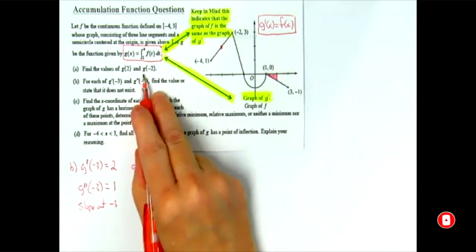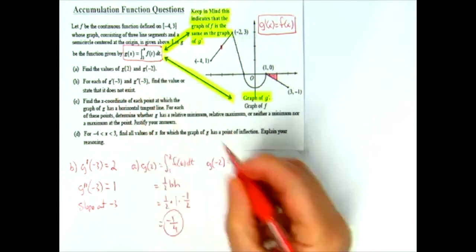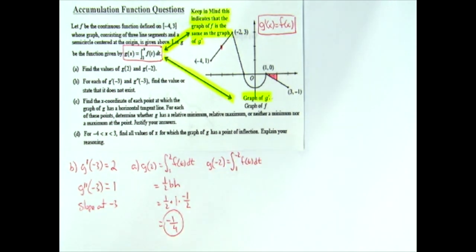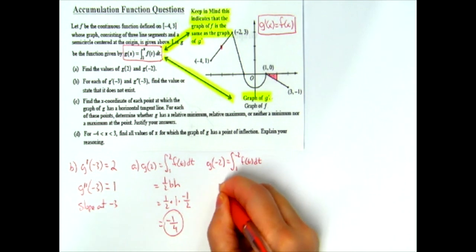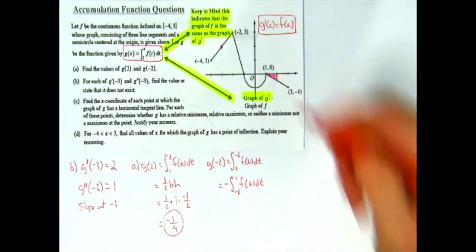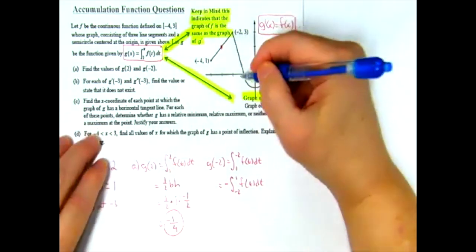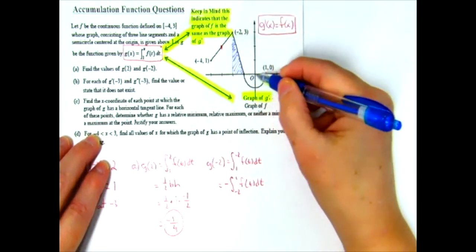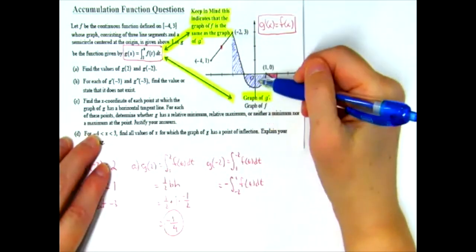For g of negative two, based on how the g function is defined, that gives the integral from one to negative two of f of t dt. Since the lower limit must be smaller, I reverse the limits and add a negative: negative times the integral from negative two to one of f of t dt. Going from negative two all the way to one, I have a triangle out on the left and a half-circle closer to one.